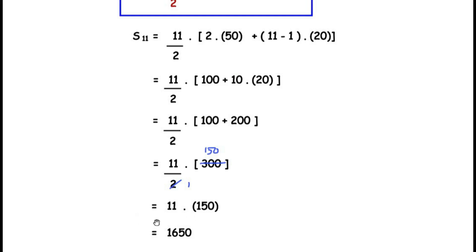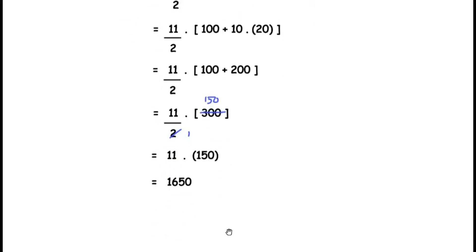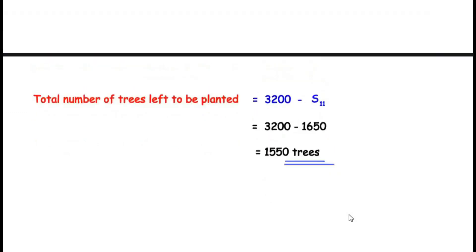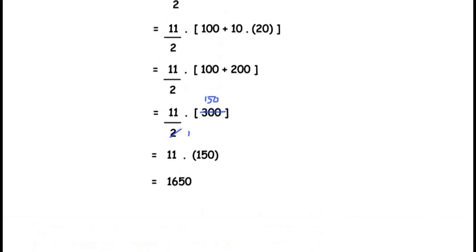So 1650 trees have been planted up to the 11th row. The number of trees still left to be planted is 3200 − 1650 = 1550. I hope you understood all the steps and found the video useful. Check out similar examples on my channel, and like, share, and subscribe. Thank you for watching.